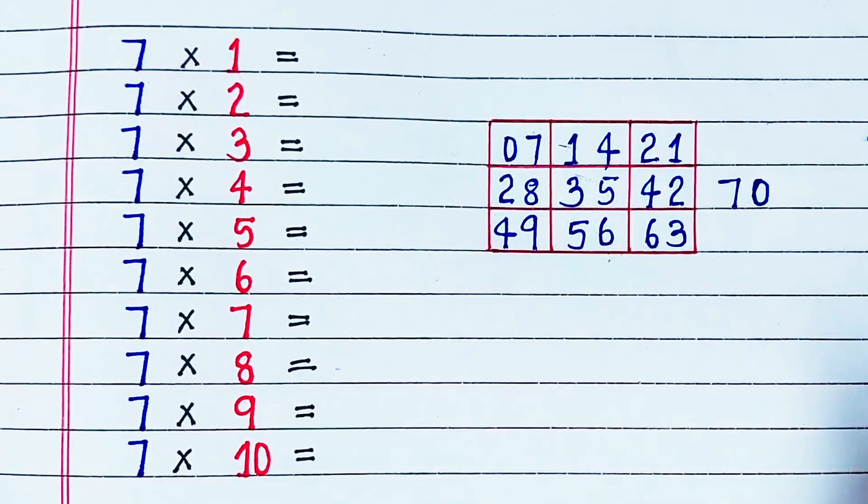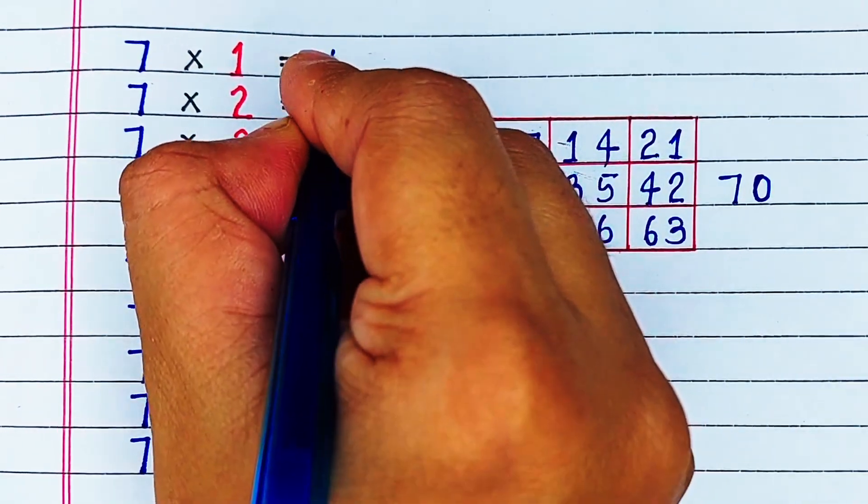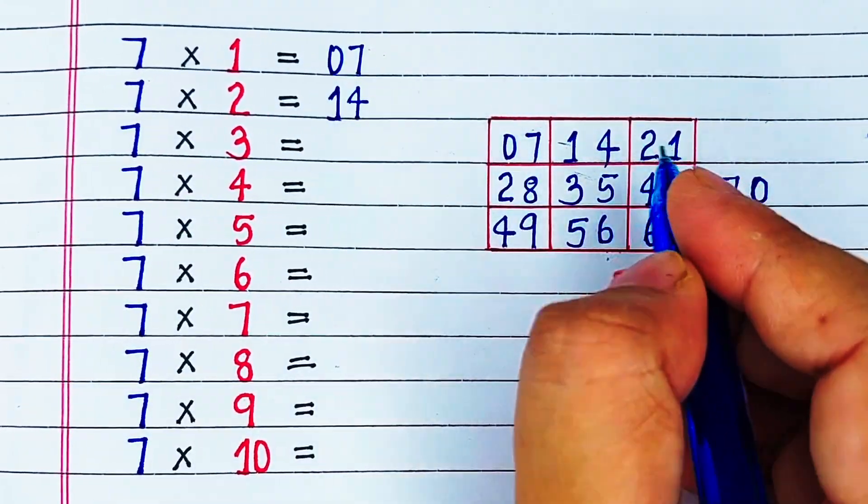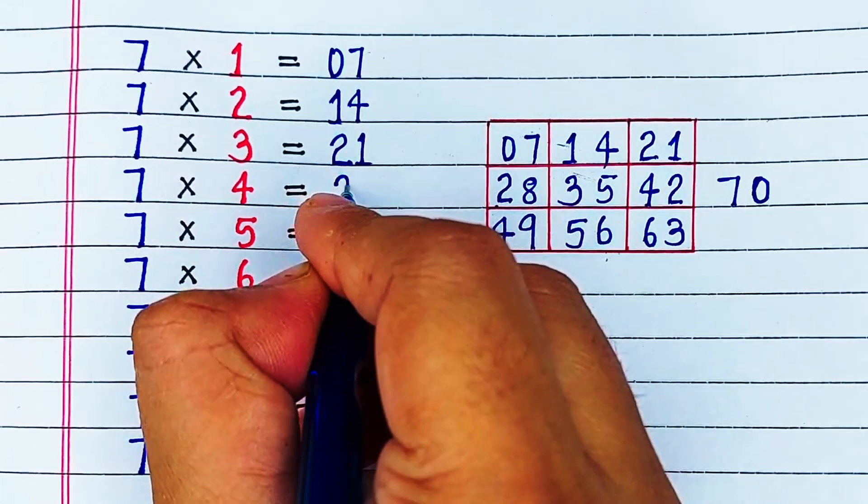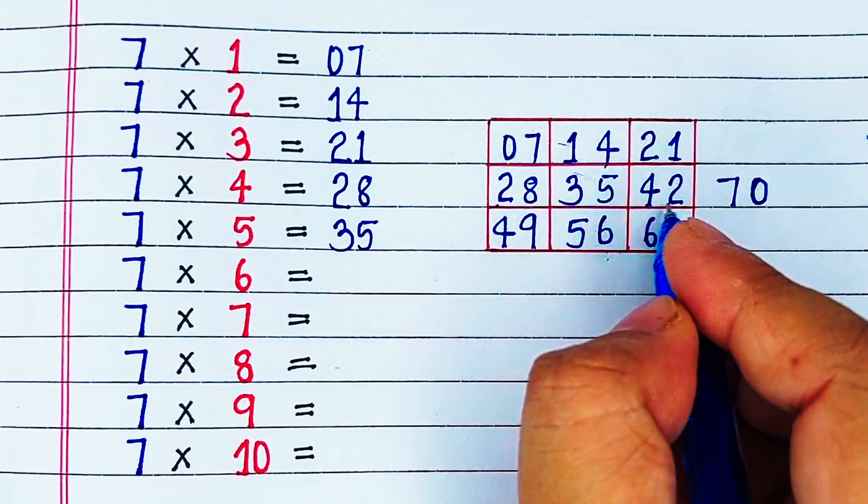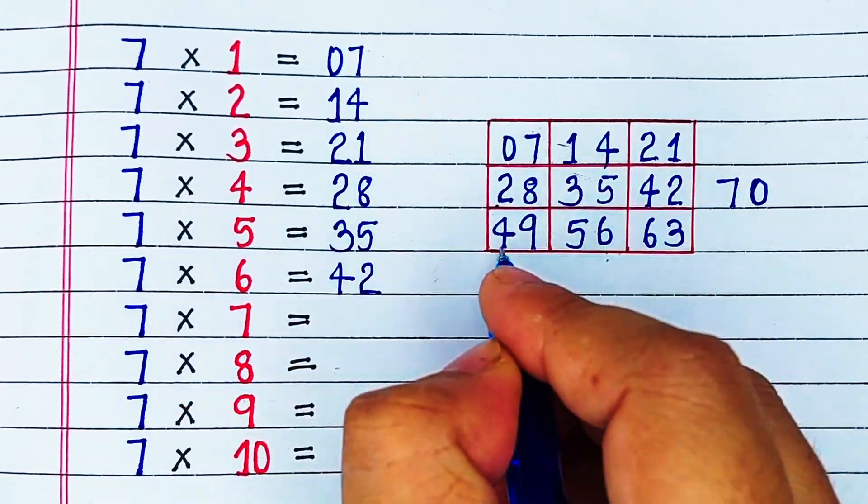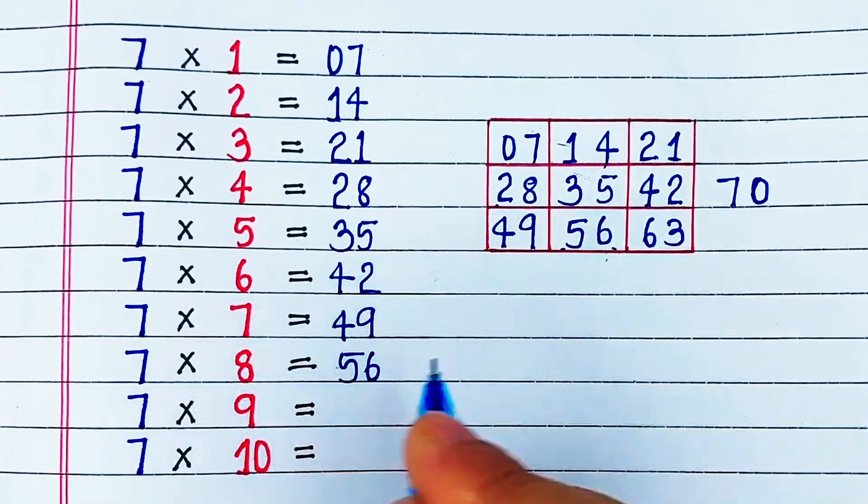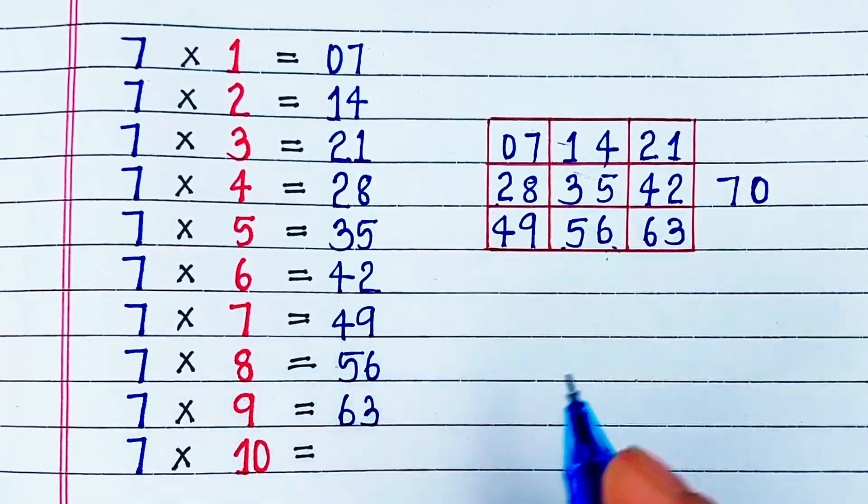Let's recite. 7 1s are 7, 7 2s are 14, 7 3s are 21, 7 4s are 28, 7 5s are 35, 7 6s are 42, 7 7s are 49, 7 8s are 56, 7 9s are 63, 7 10s are 70.